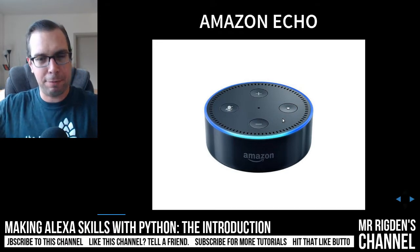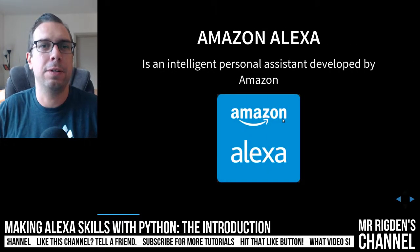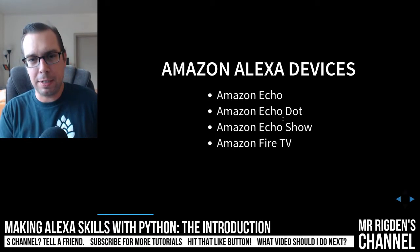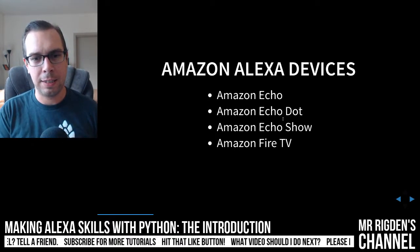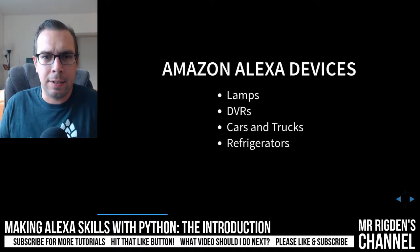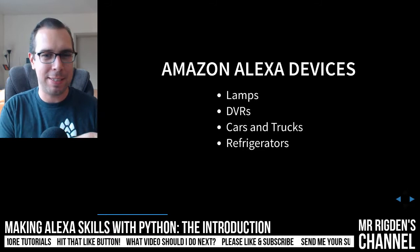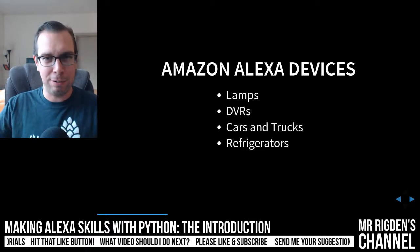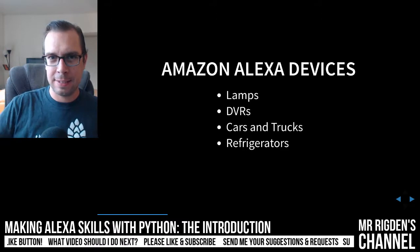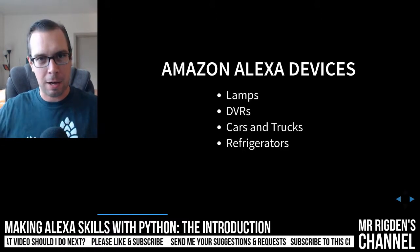The Amazon Echo is just a smart speaker — a system of microphones and a speaker. Alexa is the software. It's in the Echo, the Echo Dot, the Fire TV, and is now also in DVRs, cars, trucks, and refrigerators. So it's important to remember that the Echo Dot is a smart speaker and Alexa is the software.